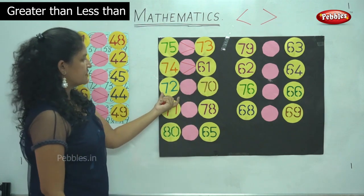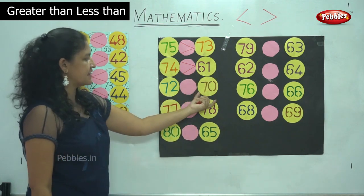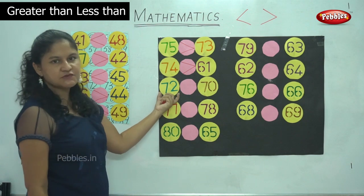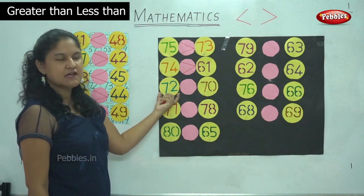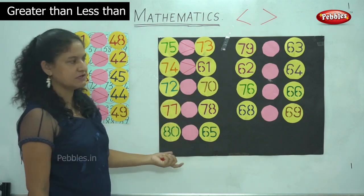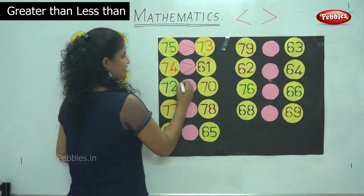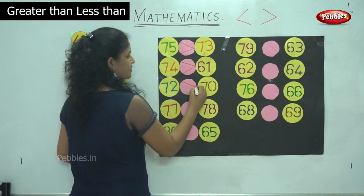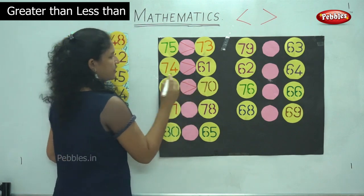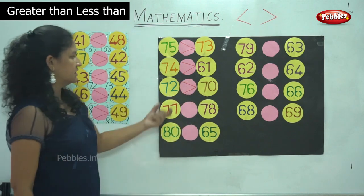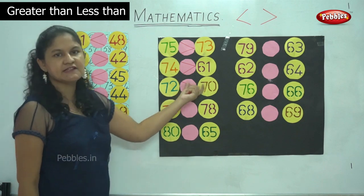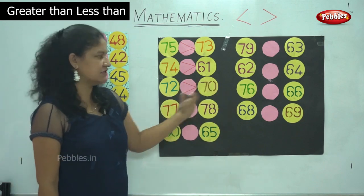Next we have 72 and 70. So 72 is the greater number between these two numbers. In that case, the mouth of the alligator opens towards the bigger, greater number. So 72 is greater than 70.